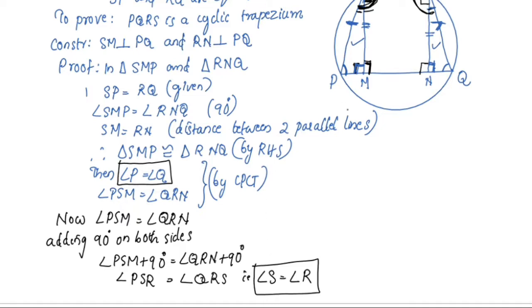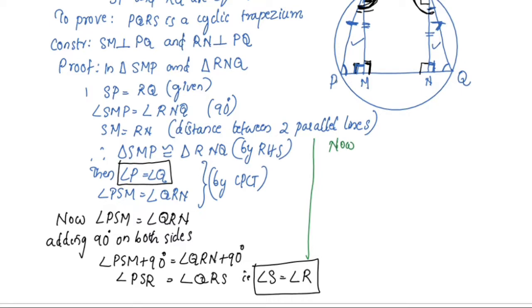By the Angle Sum Property, angle P plus angle Q plus angle R plus angle S is equal to 360 degrees.